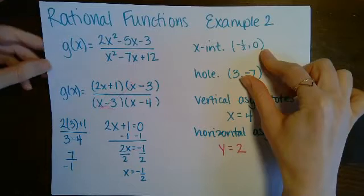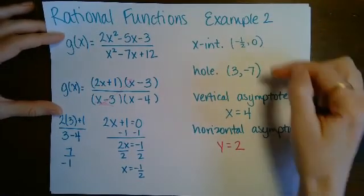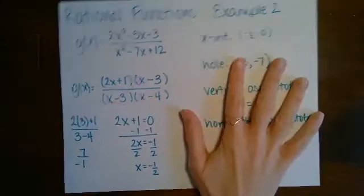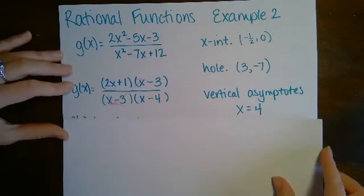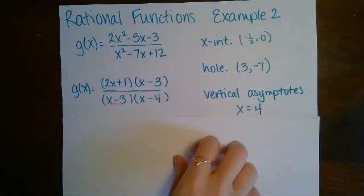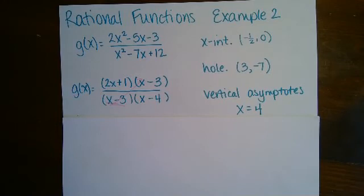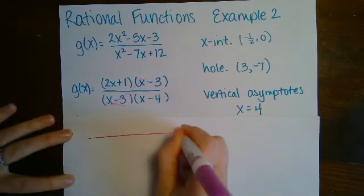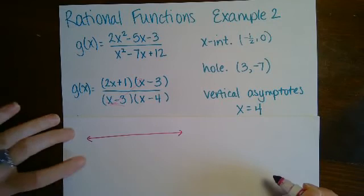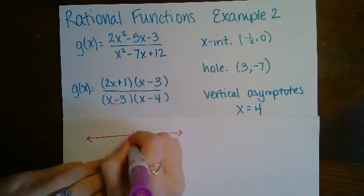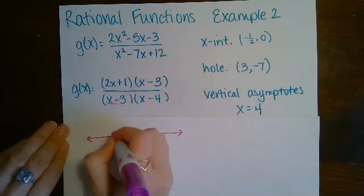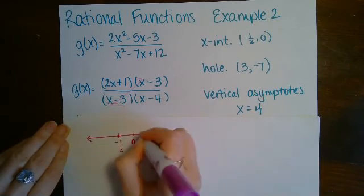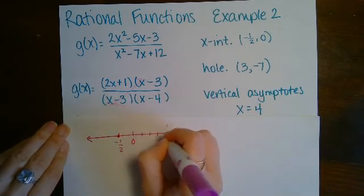In this case the hole is not on the x-axis, so we're only concerned with the x-intercept and the vertical asymptote. We set up our number line and mark zero, our x-intercept at negative one-half, and our vertical asymptote at four.